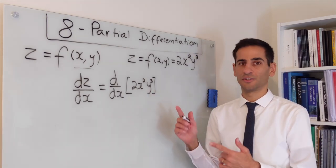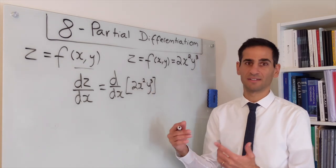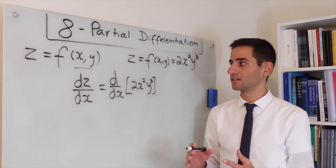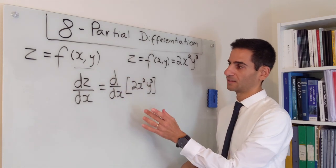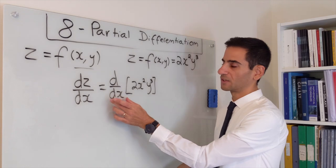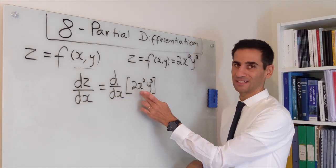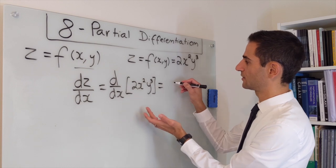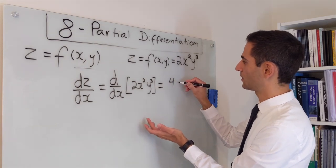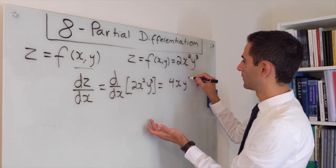You should definitely not be differentiating this like an implicit function. What is happening here is this is a function of x and y. You're differentiating in respect to x, which implies that anything that is not an x is a constant. And therefore differentiating this is just getting 4xy³.